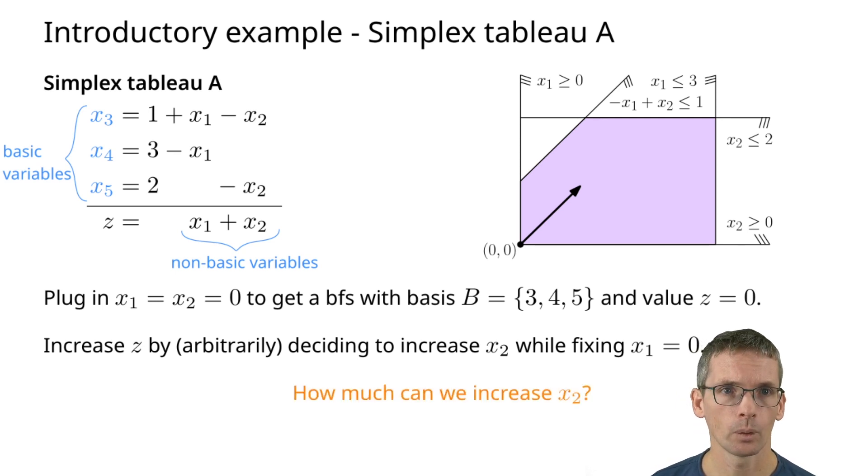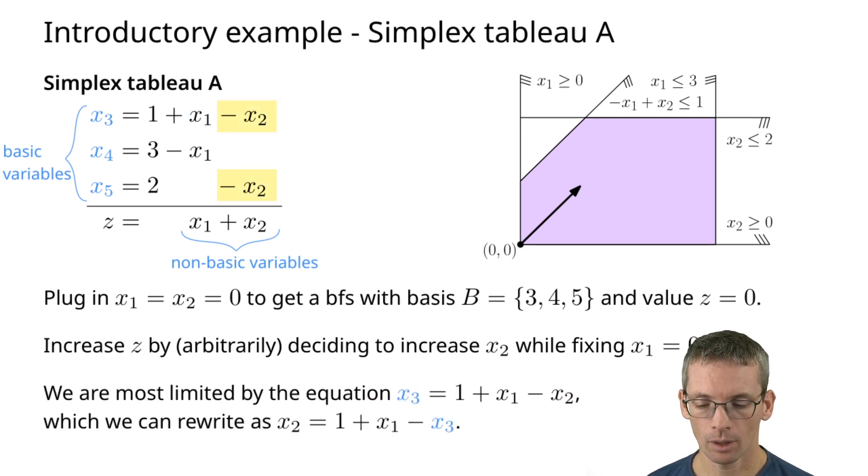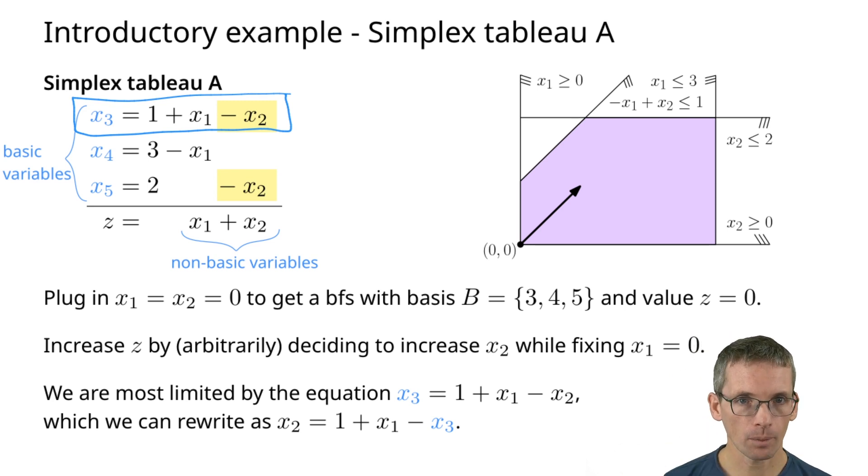We should look at how far can we increase z by increasing x2. For that we are going to look at the current basic variables. For x3, if I would be increasing x2, assuming x1 is 0 simply, then I can increase x2 to 1. x4 does not constrain x2, x5 allows me to make x2 at most 2. So taking all of those three together, I see that the most constraining variable is x3.